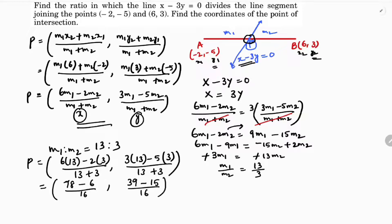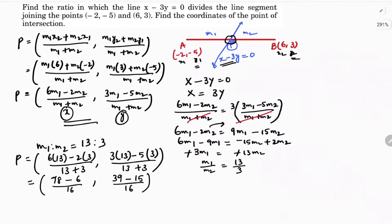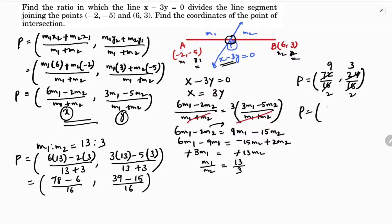Calculating further: x = 72/16 = 9/2 and y = 24/16 = 3/2. So the point of intersection P is (9/2, 3/2), which can also be written as (4.5, 1.5). Therefore, the point of intersection is 4.5 comma 1.5 and the ratio is 13 to 3.